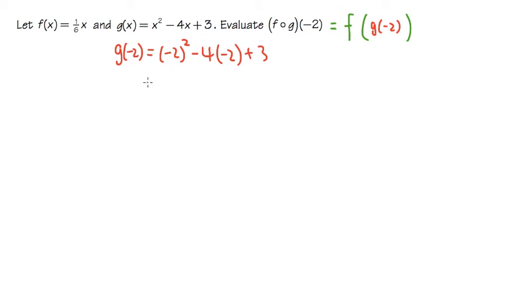And now we just have to work this out. We will do the exponent first. This is negative 2 to the second power, negative 2 times negative 2. That will give us positive 4. And then here we have negative 4 times negative 2. That will give us plus 8. And then at the end, we have the plus 3.